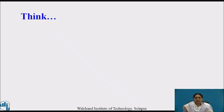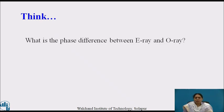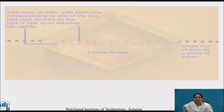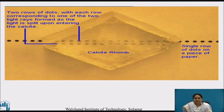Think for a while: what is the phase difference between the E-ray and O-ray? As shown in the figure, the calcite crystal demonstrates double refraction. When the light ray enters the calcite, it splits into two rays — shown as two rows of dots — while on paper it shows a single row of dots.